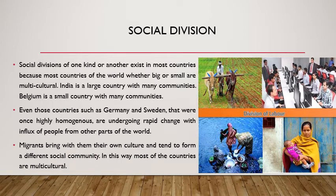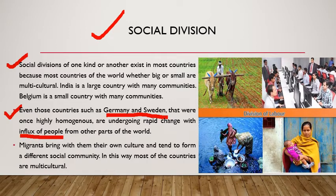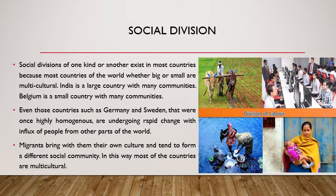Social divisions of one kind or another exist in most countries because most countries of the world are multicultural. India is a large country with many communities; Belgium is a small country with many communities. Even countries such as Germany and Sweden that were once highly homogeneous are undergoing rapid change with influx of people from other parts of the world. Migrants bring their own culture and tend to form different social communities, making most countries multicultural today.